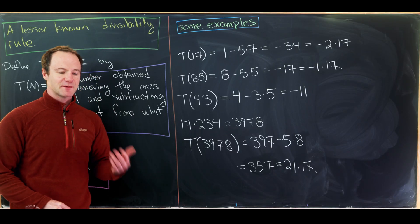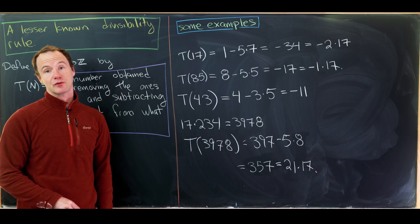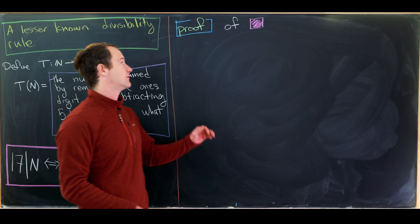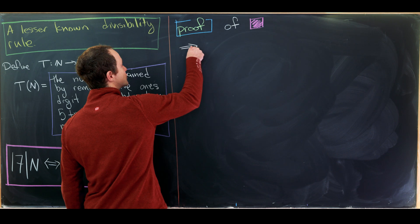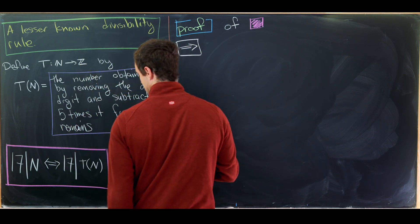So now that we've done some of these examples, let's see how the proof goes. Now we're ready for our proof. And I'll just say proof of this magenta box thing down here. So let's start with the forward direction.